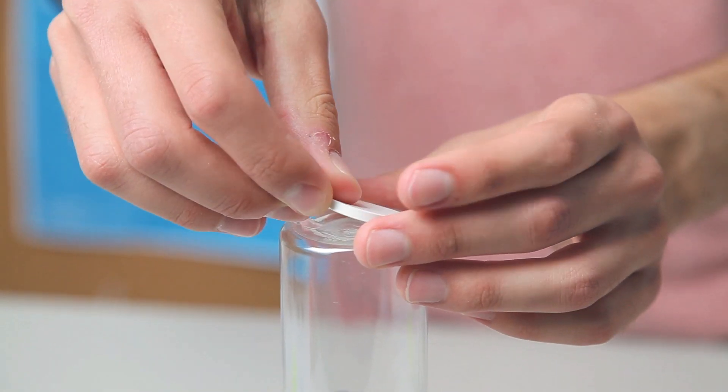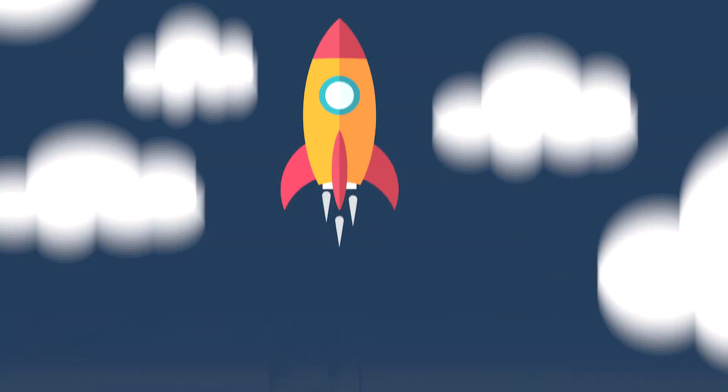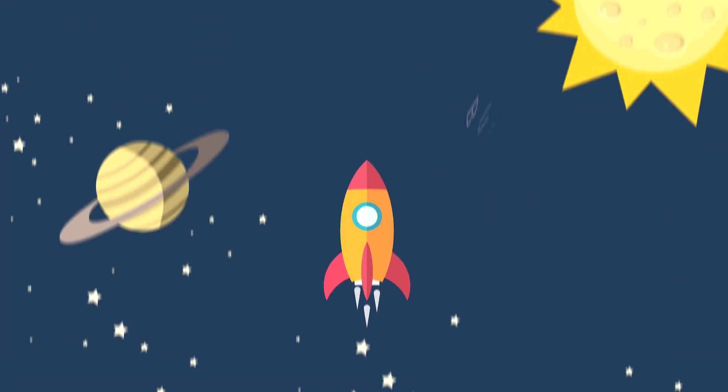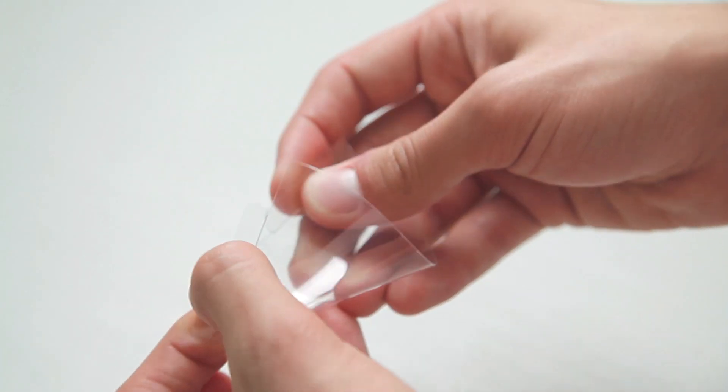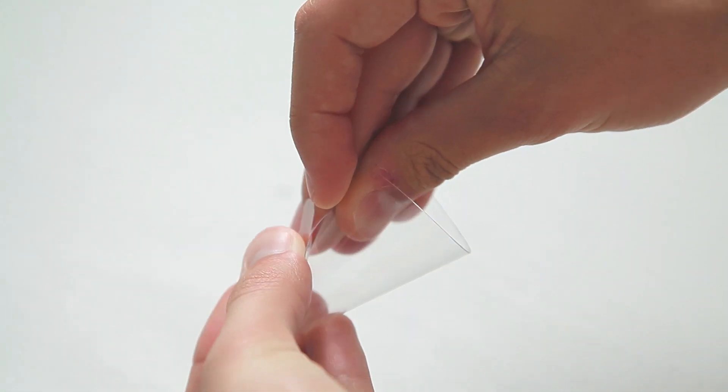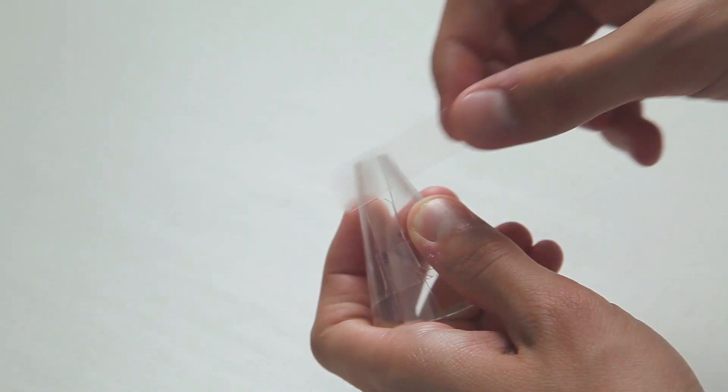Use your sticky foam disc to attach your nose cone to your rocket. Now let's build your funnel. Roll your funnel sheet into a cone shape and slide the notches together. Align the notches so that the lines are parallel and secure it down with two clear stickers.